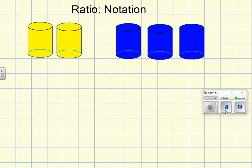We would say the ratio of yellow to blue is 2 to 3, and we'd write the ratio as yellow to blue is 2 to 3. We can also flip that round and think about the ratio of blue to yellow.